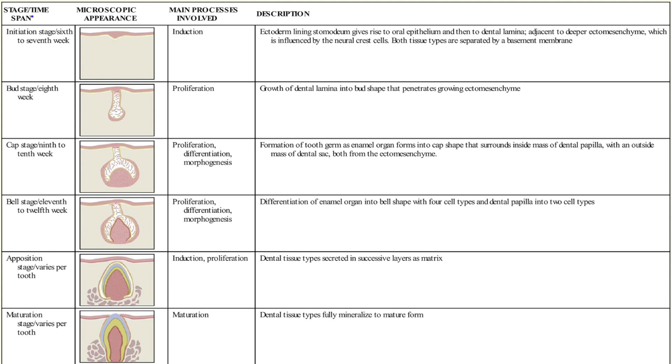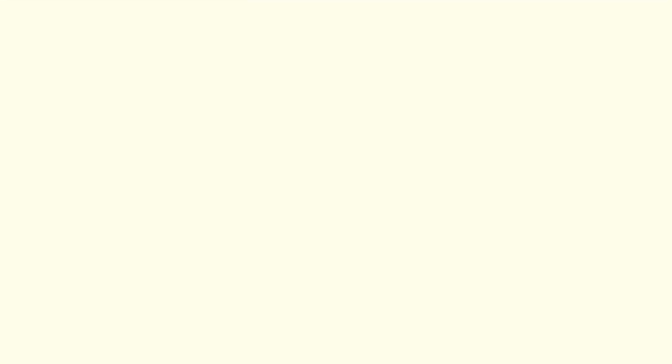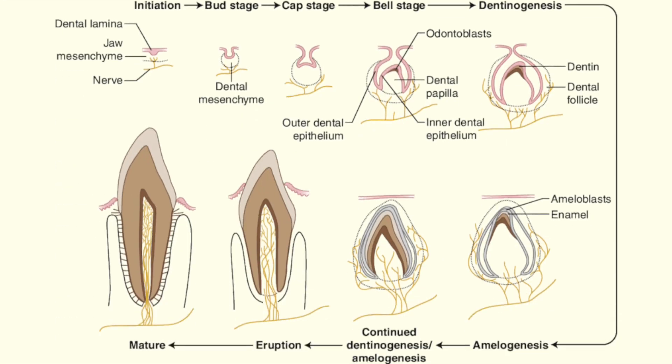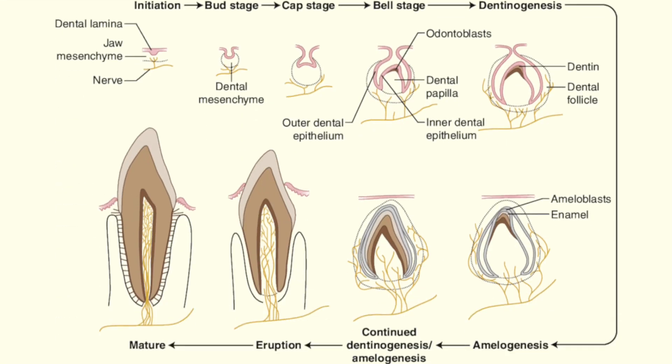This is followed by the calcification stage, when the final calcification of the dentin and enamel matrices are completed. This stage ends in a complete, unerupted tooth. The eruption stage is when the tooth finally emerges into the oral cavity. The last stage is tooth attrition, where the occlusal and incisal surfaces of the teeth are worn down during natural occlusion.